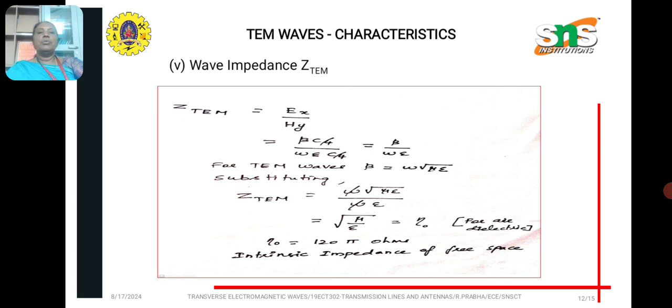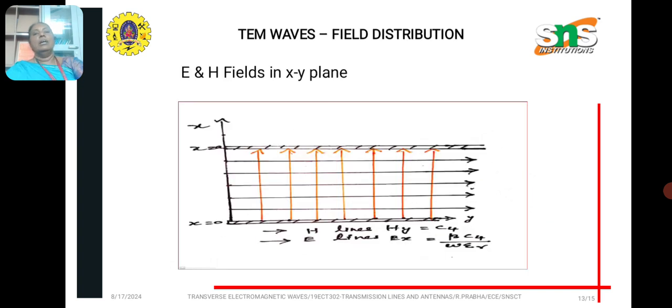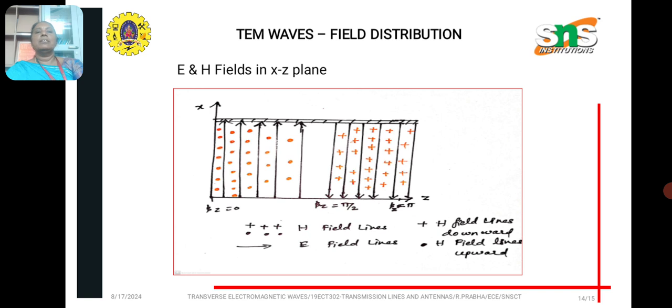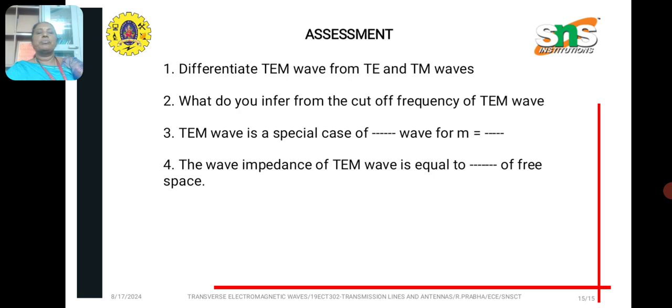And we know beta is omega root of mu epsilon. It is substituted in the impedance equation. We get root of mu by epsilon as eta naught for air dielectric. Eta naught is the free space impedance, 120 pi ohms. And this is the electric and magnetic fields of transverse electromagnetic wave in XY plane. These are the field configurations of electric and magnetic fields in XZ plane.